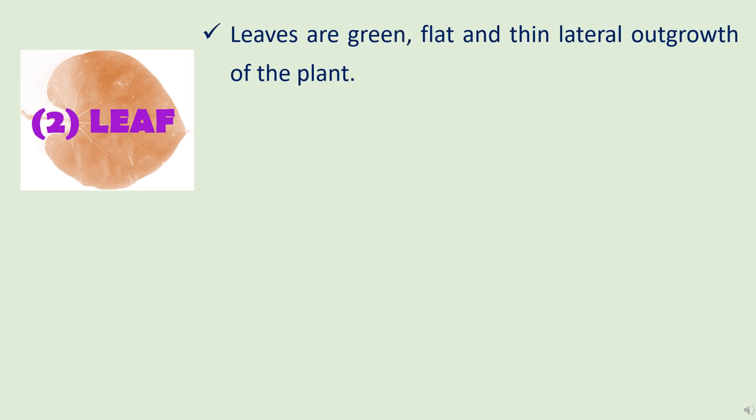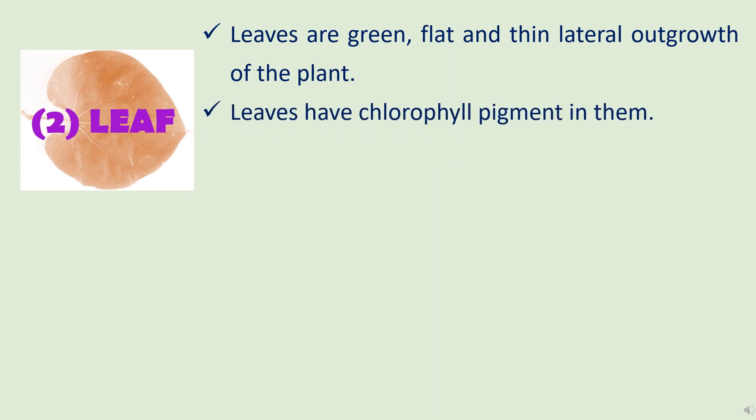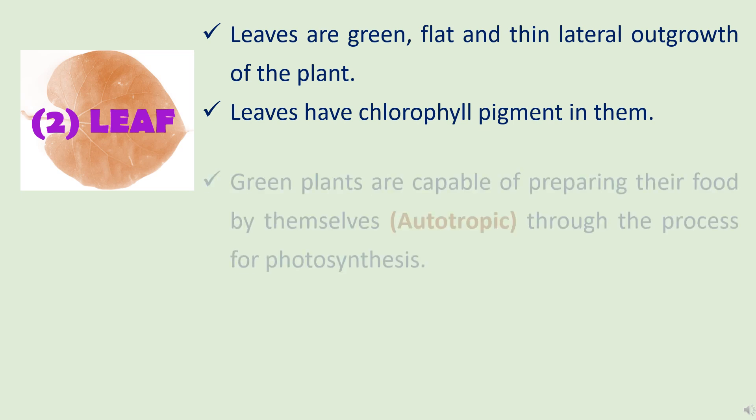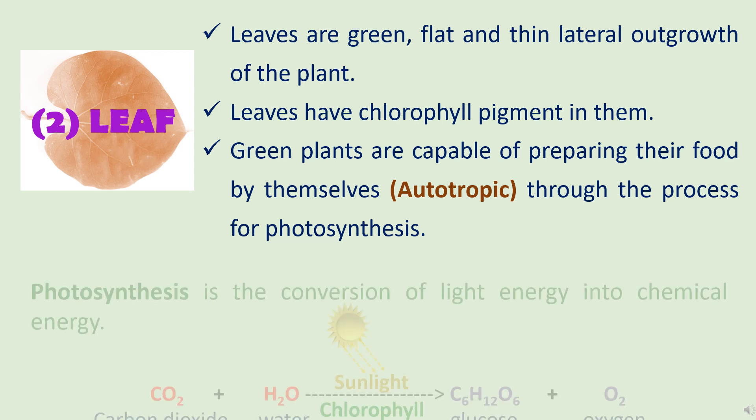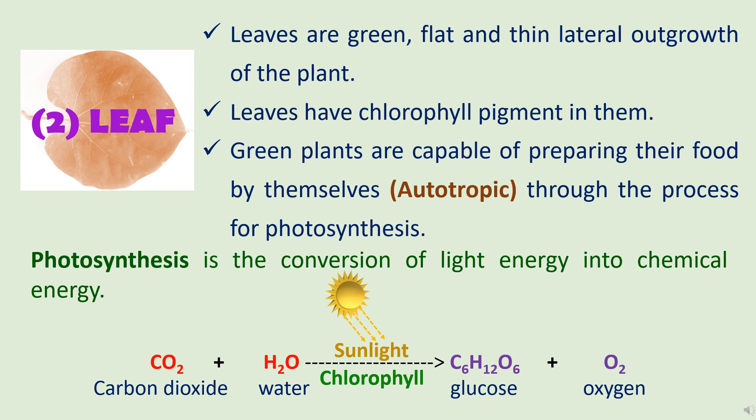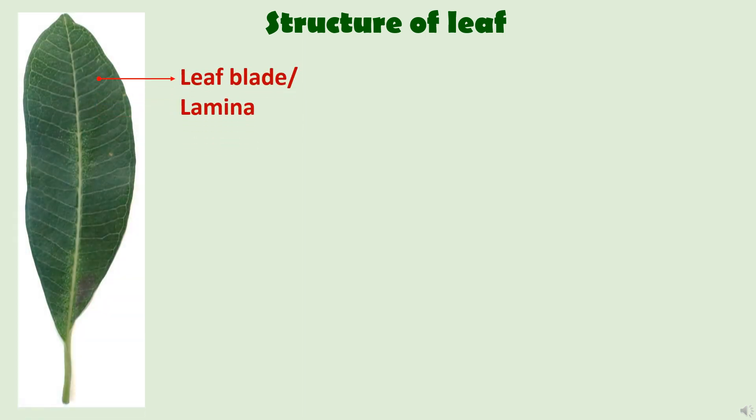The second part of the shoot system is the leaf. Leaves are green, flat, and thin lateral outgrowths of the plant. Leaves are green in color because of the presence of the chlorophyll pigment in them. Most plants are autotrophic because they are capable of preparing their own food through the process of photosynthesis — the conversion of light energy into chemical energy. Sunlight is trapped by the chlorophyll pigment in the leaves and used to convert carbon dioxide and water into sugars, mainly glucose. Oxygen is released as a byproduct, which is utilized by animals. Most of the leaf consists of a wide, thin, flat leaf blade called the lamina.